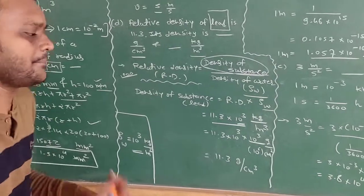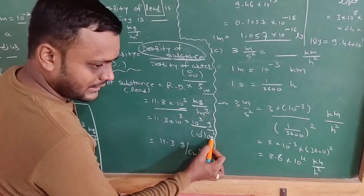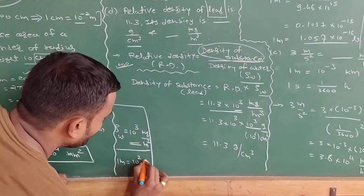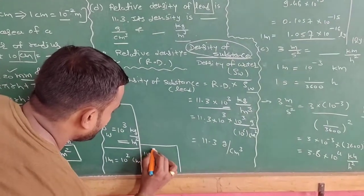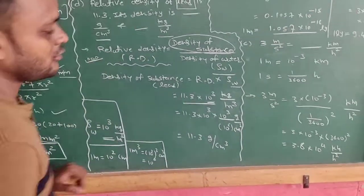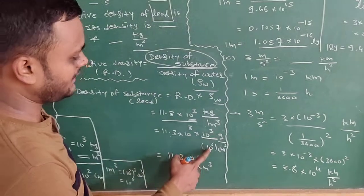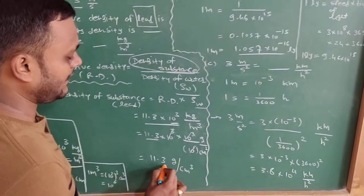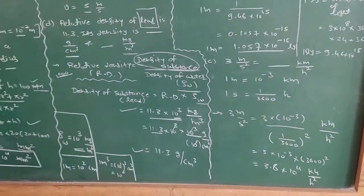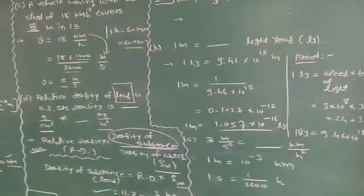Now we convert to gram per centimeter cube. 1 kg = 10 raise to 3 gram; 1 meter = 10 raise to 2 cm, so 1 meter cube = (10 raise to 2) raise to 3 = 10 raise to 6 cm cube. Substituting, the 10 raise to 6 in denominator cancels with 10 raise to 3 from kg-to-gram conversion (3 + 3 = 6), leaving us with 11.3 gram per cm cube. So we have calculated density of lead in both units: 11.3 into 10 raise to 3 kg per meter cube and 11.3 gram per cm cube.